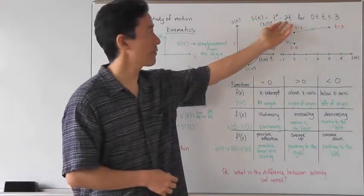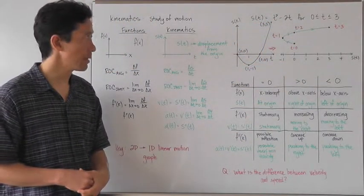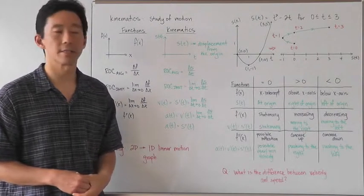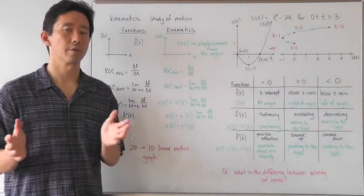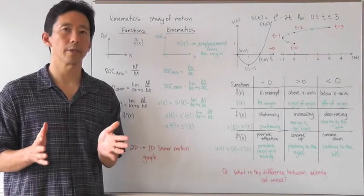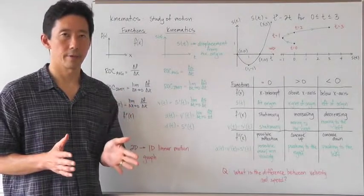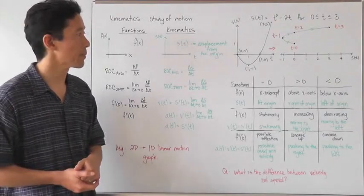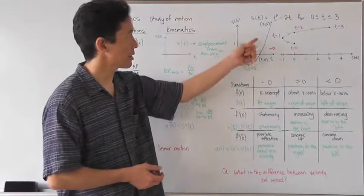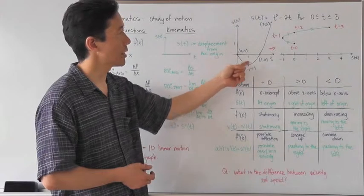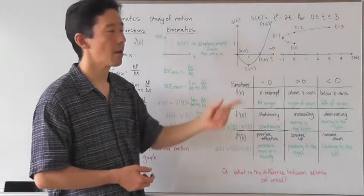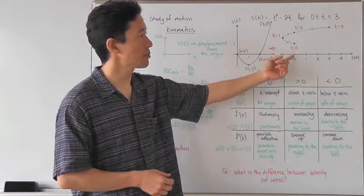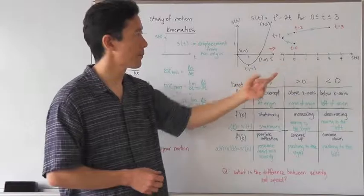Let's take a look at the situation so that we can see how we can transfer information from a two-dimensional graph to a one-dimensional linear motion graph. Let's say, for example, we have s of t, our displacement function, equal to t squared minus 2t, for 0 less than or equal to t less than or equal to 3. In other words, this displacement is only going to be taking place for 3 seconds, starting at t equals 0 and ending at t equals 3. If we take a look at the two-dimensional situation, we can plot this and it's going to look like a parabola. We need to go ahead and change this two-dimensional image to a one-dimensional image.